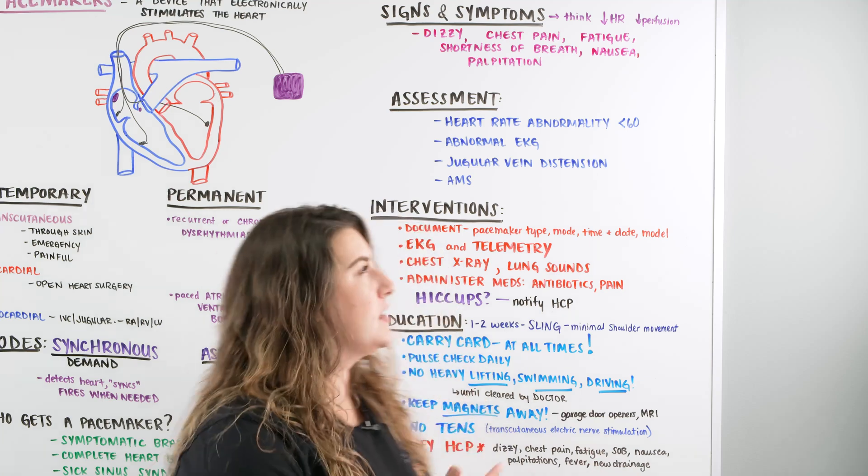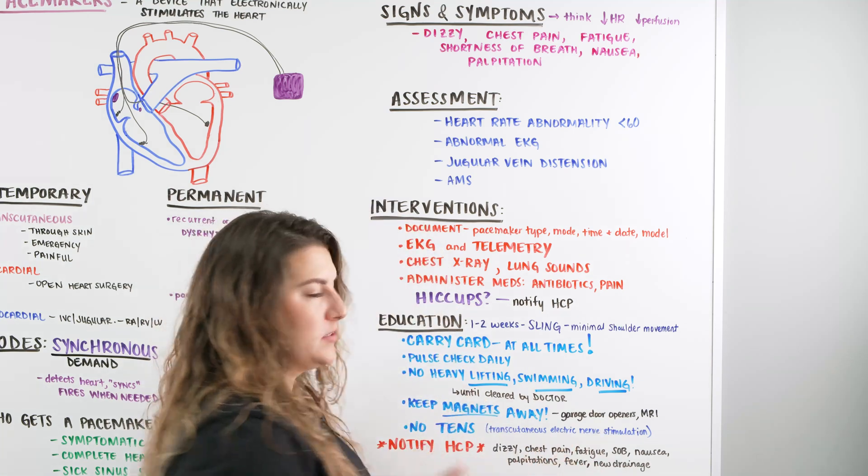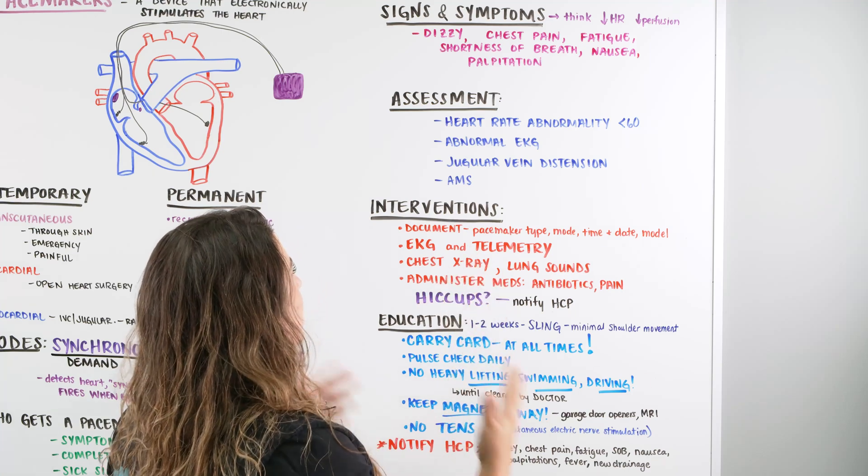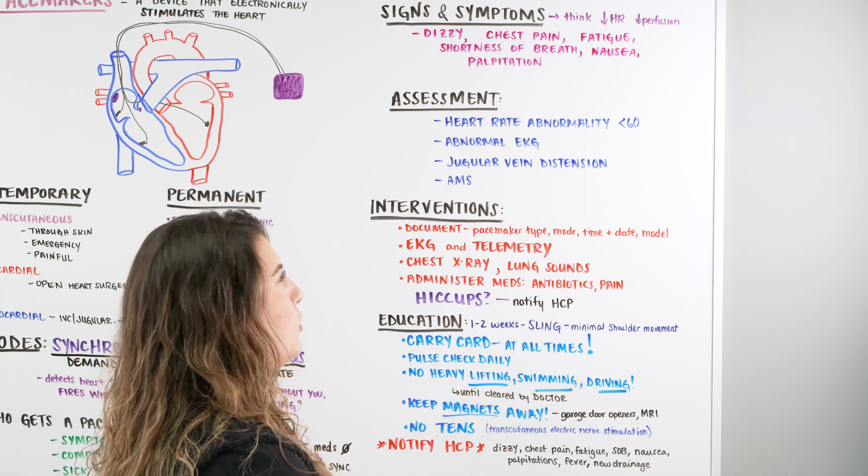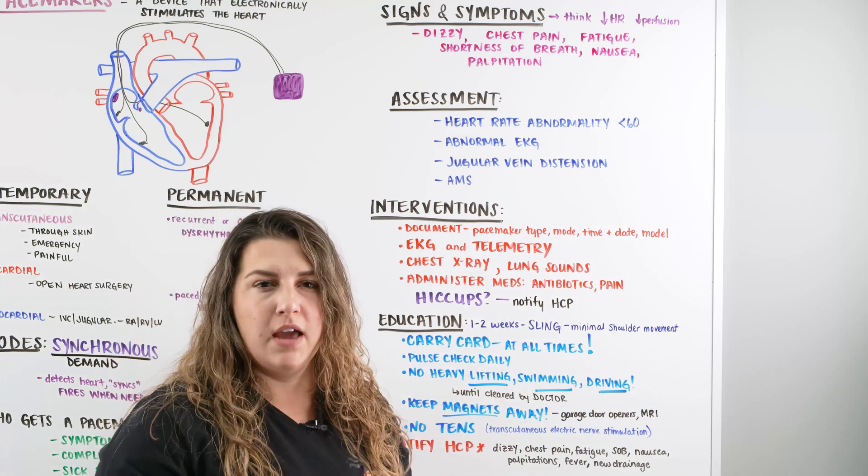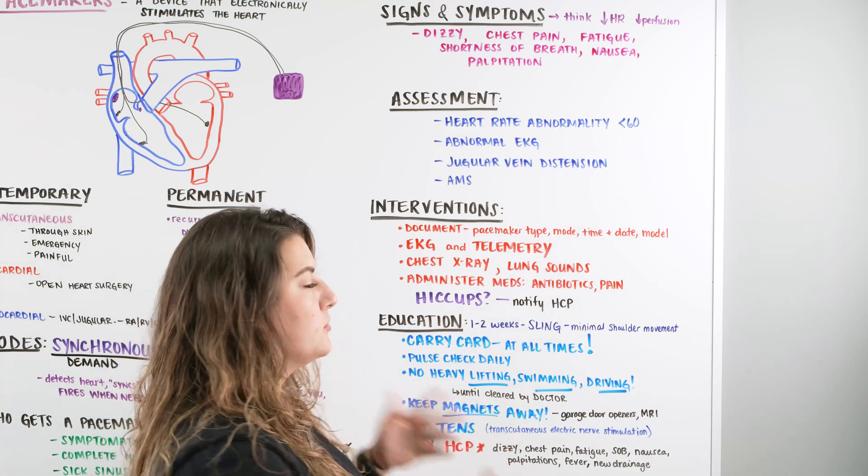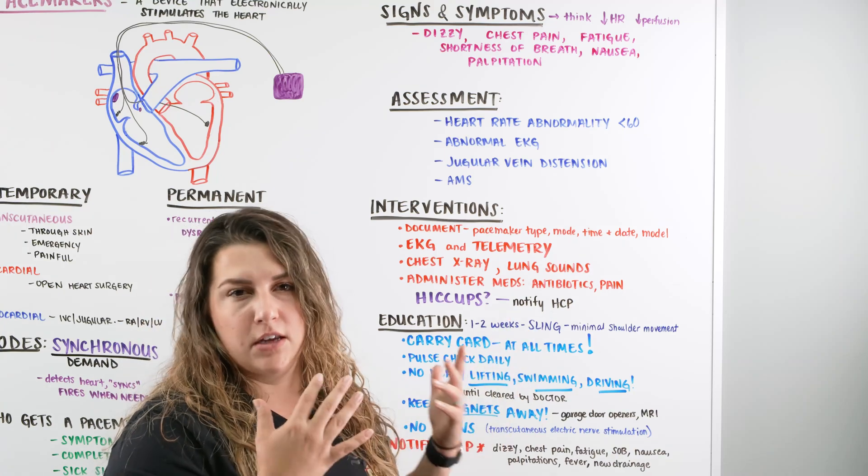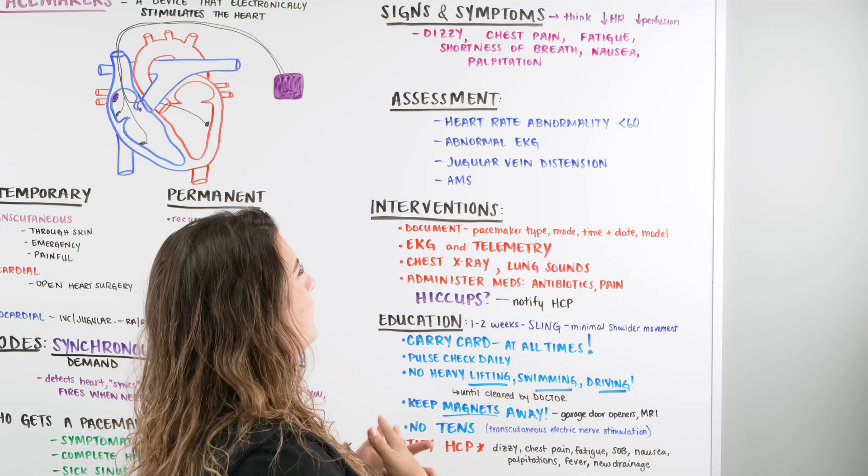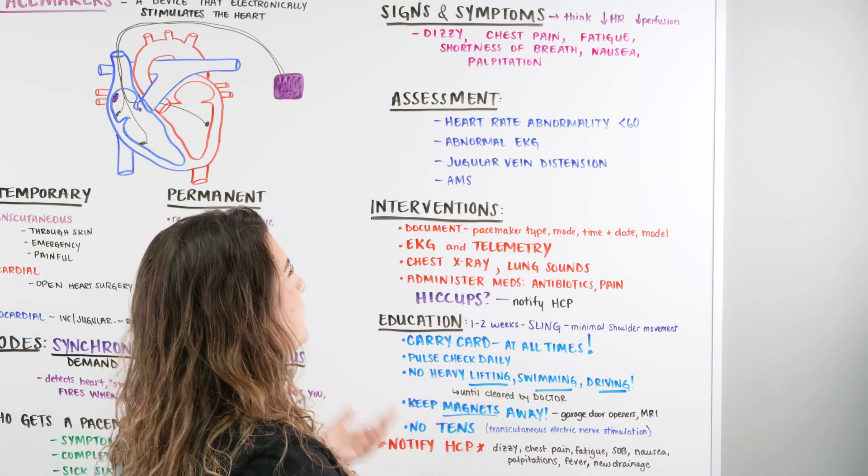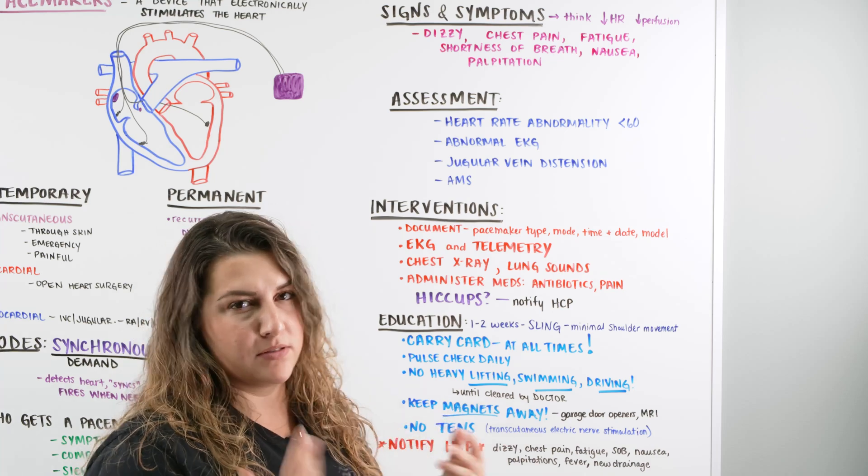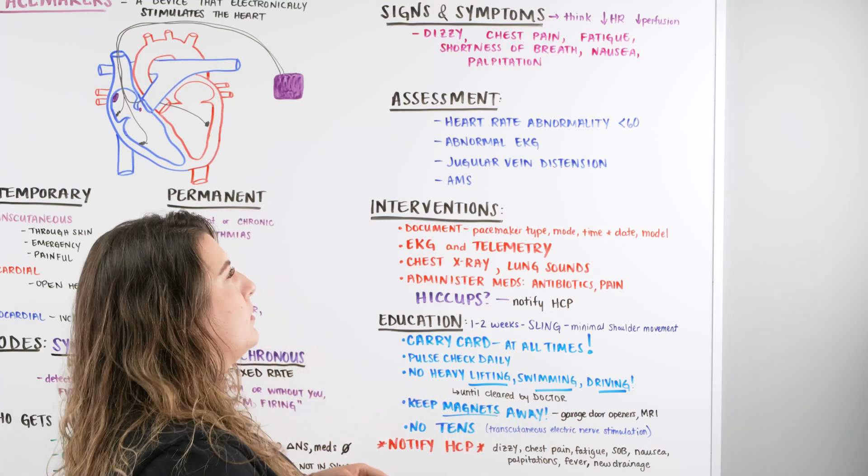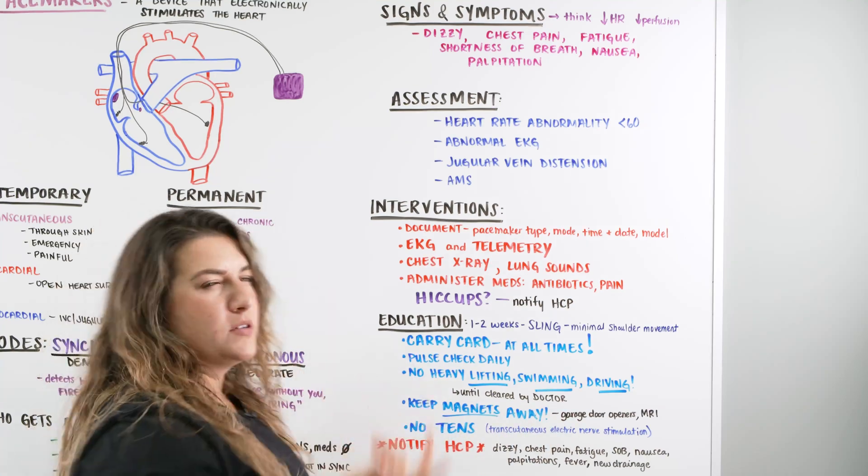Let's talk about the signs and symptoms for our patient that possibly is going to be getting surgery to get a pacemaker implanted. We're going to be thinking, like I said before, you're going to think heart rate. If the heart rate is low, then we're going to have decreased perfusion. That perfusion is going to cause all of those different issues or symptoms that our patient is going to have. It's going to be dizziness, chest pain or angina because they're not getting perfusion to the heart muscles. They're going to have fatigue and shortness of breath, possibly nausea because the heart might be doing some wacky rhythms, and then palpitations. Because of all that, we're going to be thinking, what's going on with my patient?